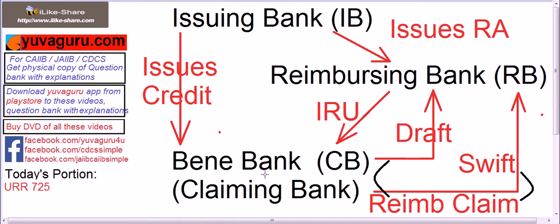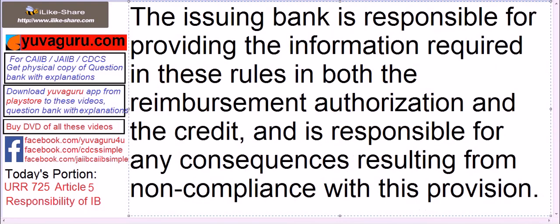If the claiming bank doesn't follow the instructions, then the responsibility lies with the claiming bank. This article is essentially about the issuing bank's obligation: if they don't provide adequate information, then they are responsible. That was the meaning of Article 5 — Responsibility of the Issuing Bank — of URR 725.